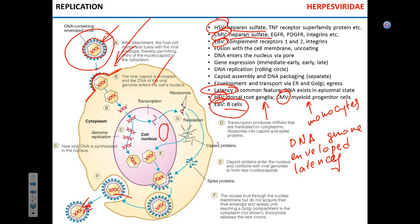Neurons do not go through mitosis, so the virus stays there forever. For monocytes and B cells, the virus will be copied along with the cell's DNA content and spread through the dividing cell population. With viruses like CMV and EBV, reactivation can occur without any symptoms, so you can be producing and transmitting herpes viruses without knowing it — the gift that keeps on giving.